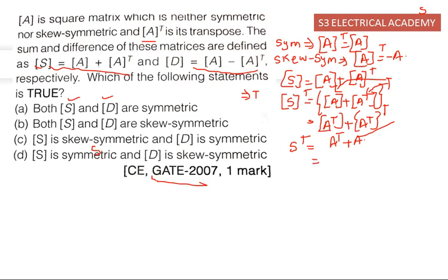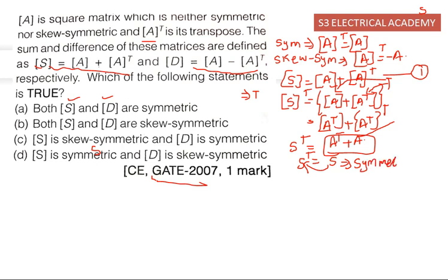This expression A-transpose plus A is, by equation one, equal to S. So S-transpose equals S, which satisfies the condition A-transpose equals A — meaning S is symmetric. We conclude that the sum S is symmetric.